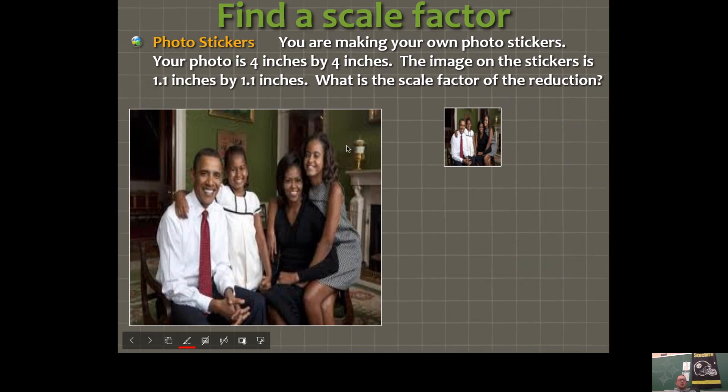You might see a problem like this as well. We're going to find a scale factor. Let's suppose you're making your own photo stickers. Your photo is four inches by four inches. The image on the sticker is 1.1 inches by 1.1 inches. What is the scale factor of the reduction? Well, clearly the shapes are similar. Both photos are squares. Four by four, 1.1 by 1.1. So you're just going to compare corresponding sides. Four to 1.1. I'm going to type it into my calculator. Four divided by 1.1. I'm going to hit math, enter, enter. And it tells me that a reduced ratio, you really shouldn't have a decimal in your ratio, is 40 to 11. And that's your scale factor. So you could say something like K equals 40 over 11.